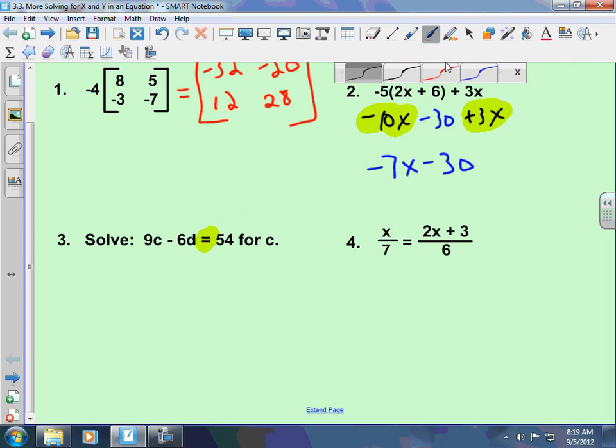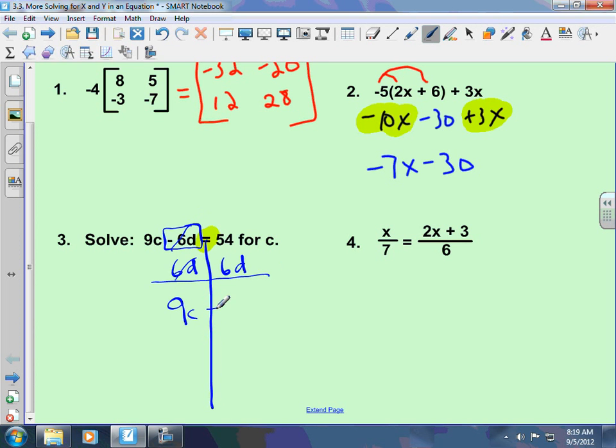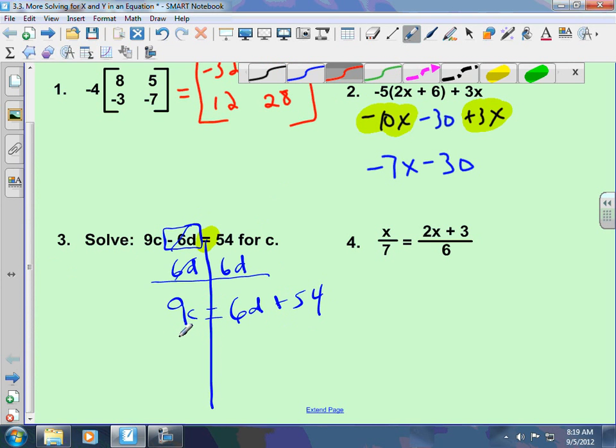So, I want to get c by itself. In order to do that, I have to move the negative 6d. Move a coefficient like you move a constant. That means I'm going to add 6d to both sides. Put my line at the equal sign. This cancels. 9c equals 6d plus 54. Now, this is not slope-intercept form. We haven't really talked about that yet. But, when you're solving for y, that is slope-intercept form.